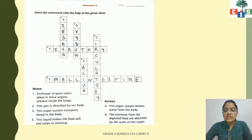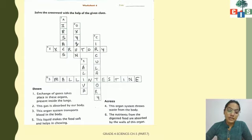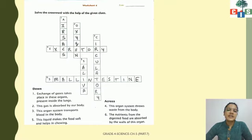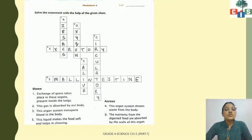Number four: this organ system throws waste from the body — the answer is excretory system. Number five: this liquid makes the food soft and helps in chewing, released inside our mouth — the answer is saliva. Number six: the nutrients from the digested food are absorbed by the walls of this organ — the answer is the small intestine.